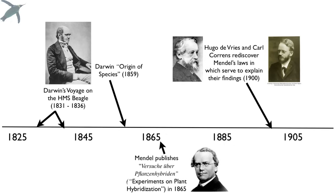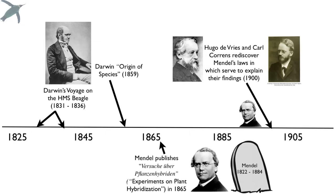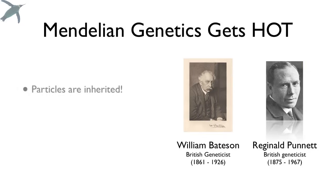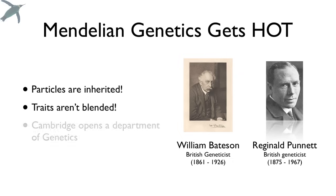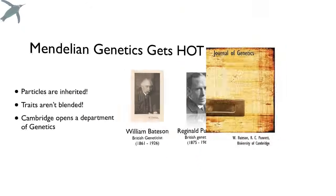De Vries introduced the concept of the gene, calling them pangenes, and he and Korens rediscovered Mendel's work around 1900 — pretty cool, considering Mendel had actually died in 1884. So Mendelian genetics got really hot. Everything was about these particles, no more blending. We also have William Bateson and Reginald Punnett: Bateson was the first to use the term 'genetics,' and he and Punnett co-founded genetic linkage as well as the Journal of Genetics in 1910.